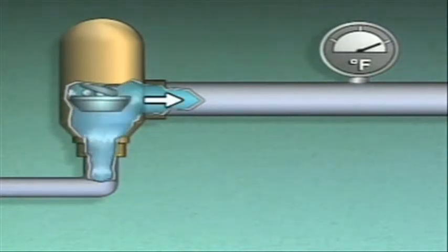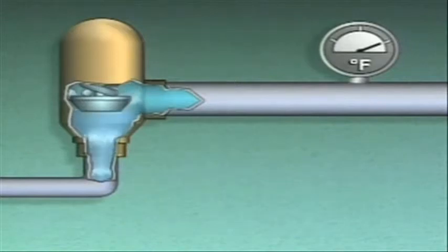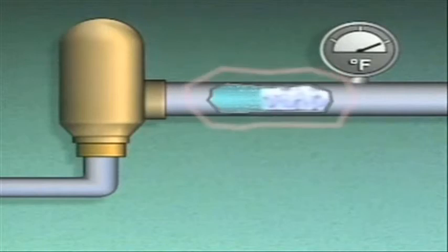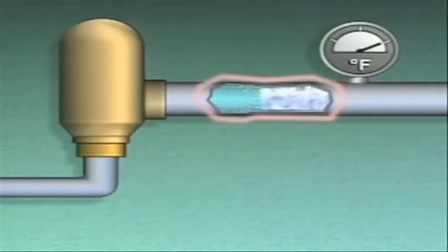As the refrigerant flows out of the valve, its pressure decreases. This drop in pressure also causes the temperature of the refrigerant to drop. As heat transfers to the refrigerant, the refrigerant begins to boil or vaporize.